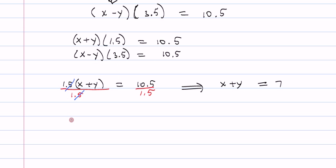We can do the same thing with the second equation, which was x minus y times the 3.5. Let's write it out in front: 3.5 times x minus y is equal to 10.5. Again, let's divide out the constants. So we have 3.5 over here and 3.5 over here, so those 3.5's cancel.